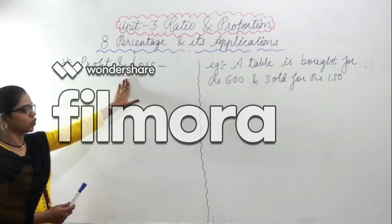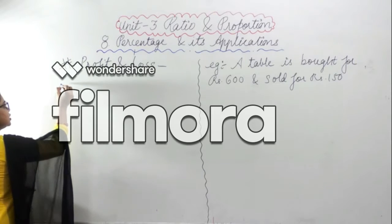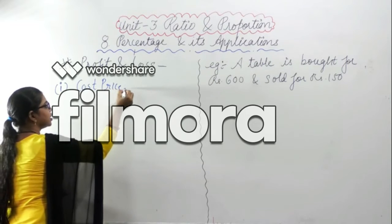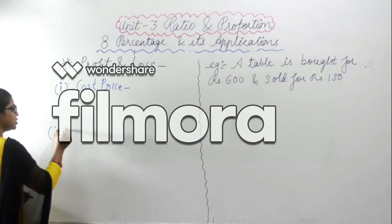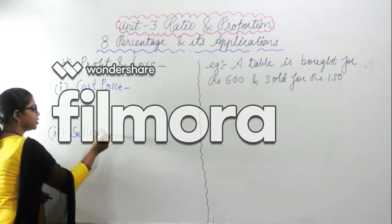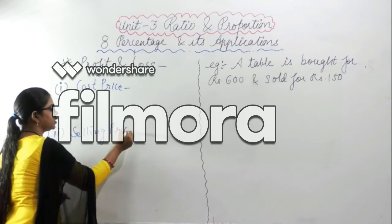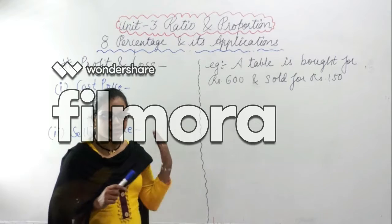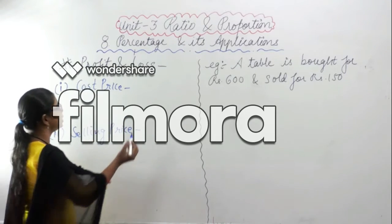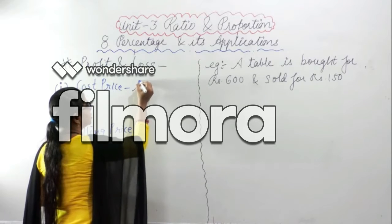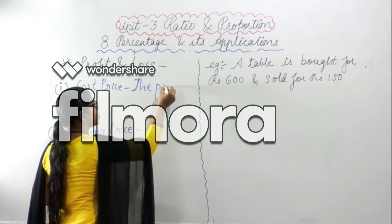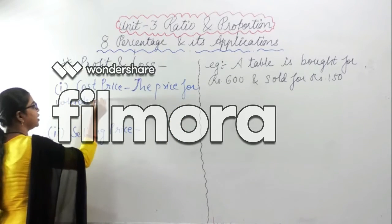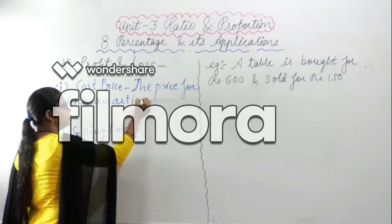The second topic is profit and loss. Here we will first study the term cost price and the second term is selling price. Cost price is the price for which an article is bought.